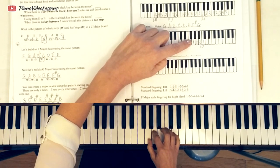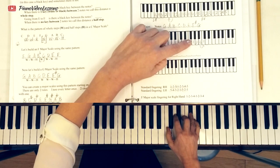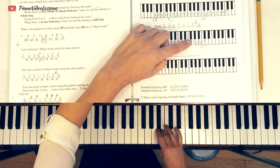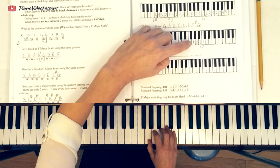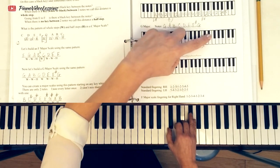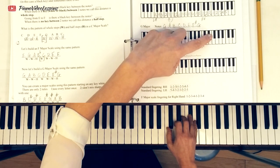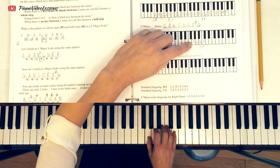So we have G, A, B, thumb under to C. And then I can reach this F sharp with my finger four. Coming back down, same notes, ran out of fingers, roll over your three. So three is always playing the note B. Three is always playing B. One is always playing C. Finger four happens here on the F sharp. So just take it easy and give that a try.